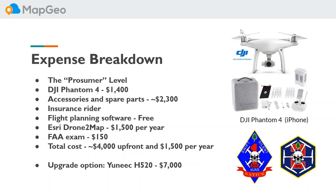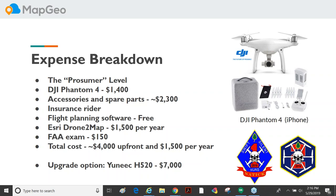Most planning software that comes with the drones is free — DJI has a lot of flight planning software to fly around a point or fly a grid. For processing imagery into a map, we use ESRI Drone2Map in Natick, which costs about fifteen hundred dollars a year for a subscription, though there are free options with size limits. The exam itself is about a hundred and fifty dollars. Total upfront costs are about four thousand dollars and fifteen hundred dollars a year. There's no fuel — just batteries — and assuming you don't crash it, you shouldn't have repair costs each year.